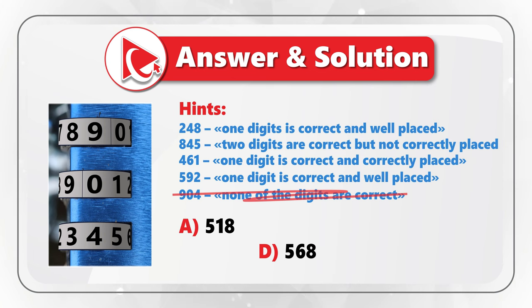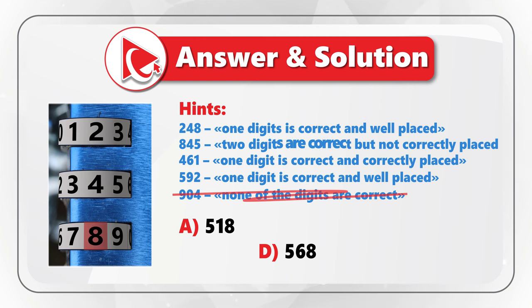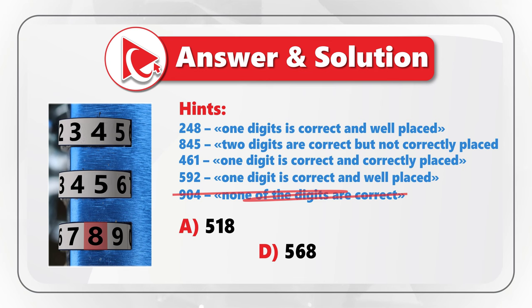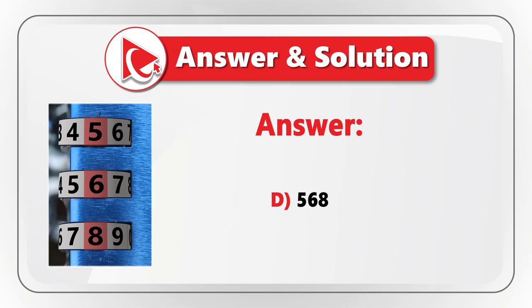Looking through the remaining hints: in hint 1, where digits are 2, 4, 8, only one digit is correctly placed, which is digit 8. In hint 2, two digits are correct but not correctly placed — those are digits 8 and 5. In hint 3, only digit 6 is correct and it is correctly placed. And in hint 4, digit 5 is correct and it is well placed. Based on this, the correct answer is choice D — 5, 6, 8.